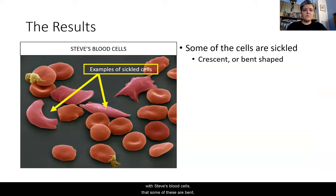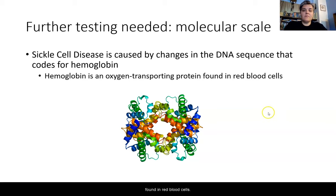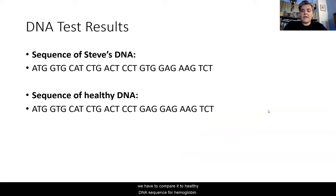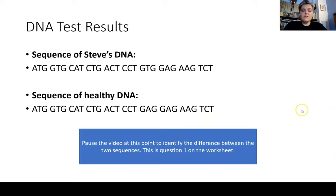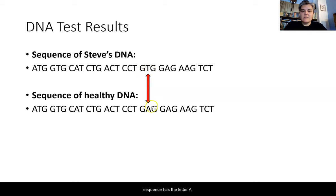We can see pretty clearly that some of Steve's blood cells are bent or crescent-shaped — these are called sickled cells. The doctor decides to do further testing at the molecular scale. Sickle cell disease is caused by changes in the DNA sequence that codes for hemoglobin, which is an oxygen-transporting protein found in red blood cells. When we see Steve's DNA, we have to compare it to the healthy DNA sequence for hemoglobin. Pause the video to identify the difference between these two sequences, which lines up with question one.